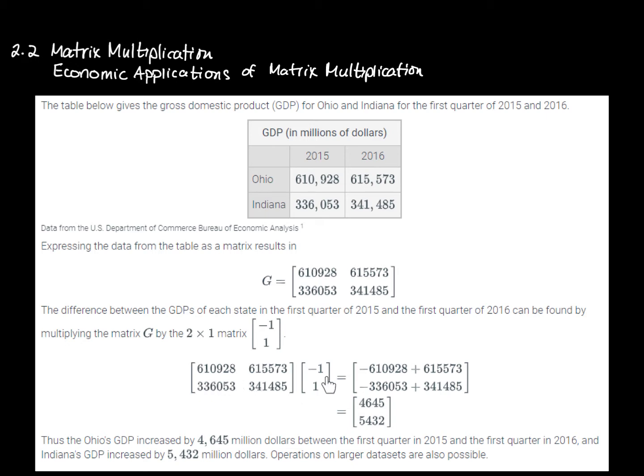you get the first two entries become negative. Because you're multiplying a two by two matrix by a two by one matrix, the result is going to be a two by one matrix.